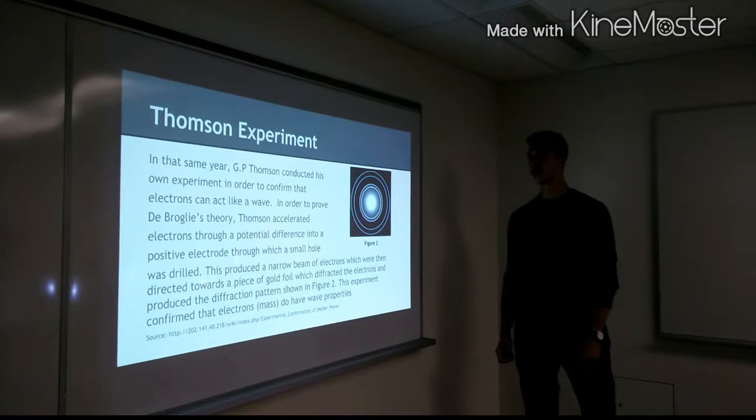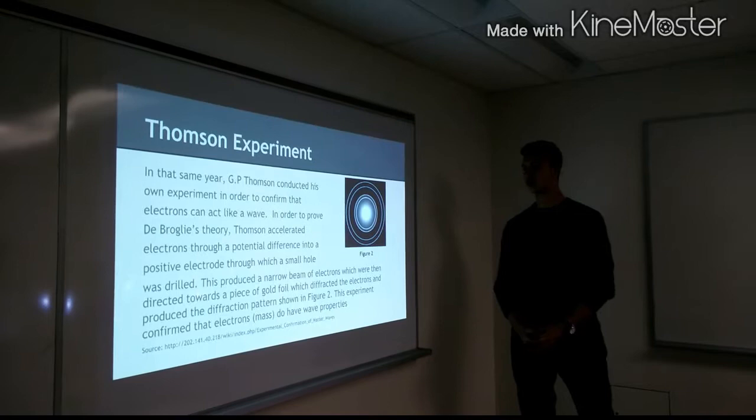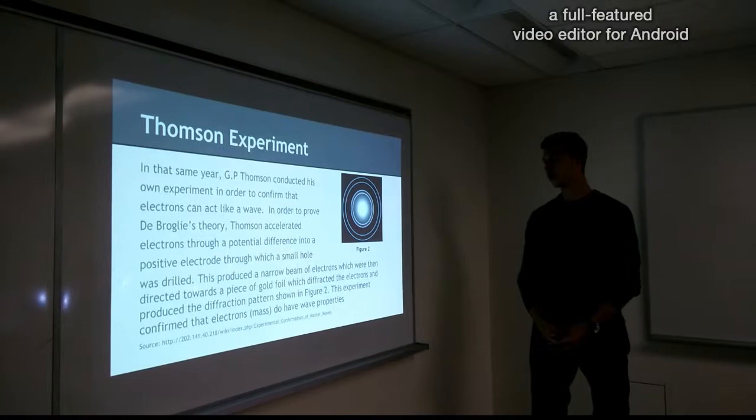In that same year, G.P. Thompson conducted his own experiment in order to confirm that electrons can act like a wave. In order to prove De Broglie's theory, Thompson accelerated electrons through a potential difference, which is a change in voltage,